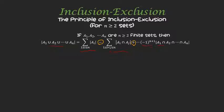Let's do one example. Let A1 be {1, 2, 3, 4}, A2 be {3, 4, 5, 6}, A3 be {1, 2, 5, 6}, and A4 be {2, 5, 7}. Notice: A1 union A2 union A3 union A4 contains 1 through 7, so the cardinality of the union should be 7.